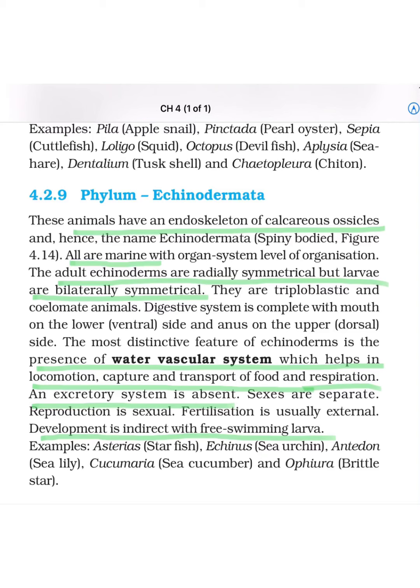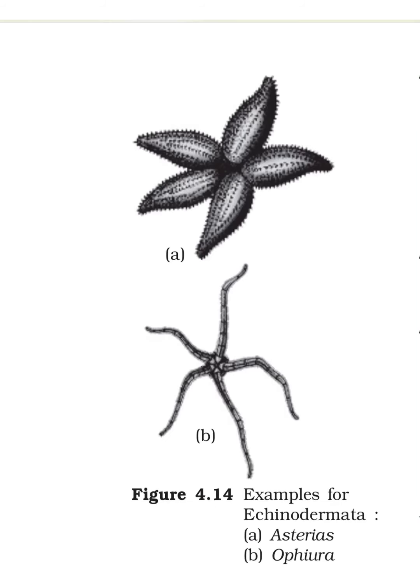The examples of Echinodermata are: starfish — scientific name Asterias; sea urchin — Echinus; sea lily — Antedon; sea cucumber — Cucumaria; and brittle star — Ophiura. Starfish you must have seen. These pictures show a few examples: the first one is Asterias, that is starfish, and B is Ophiura, which includes brittle star.